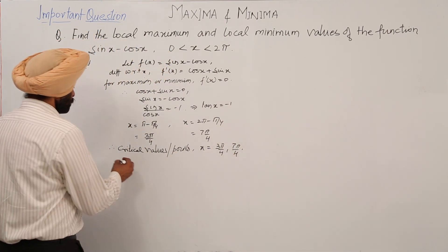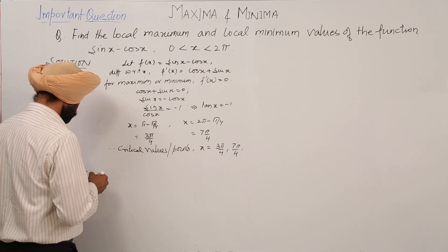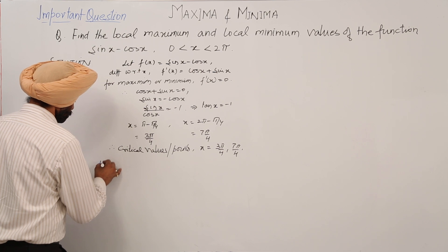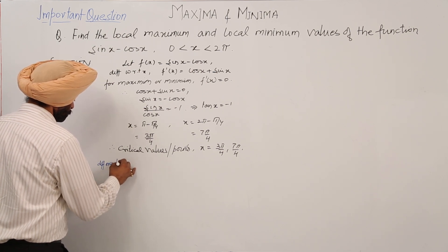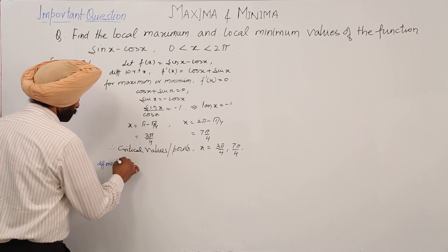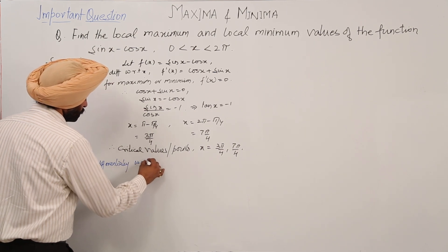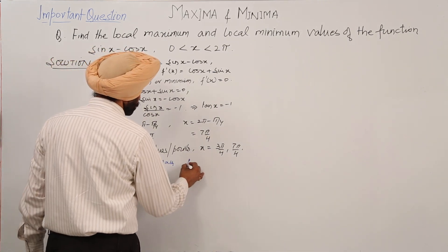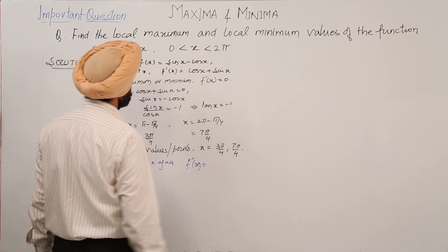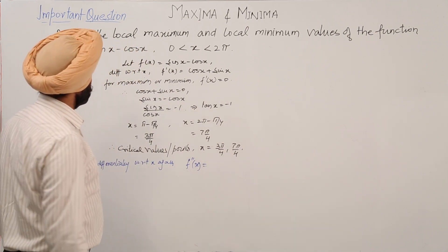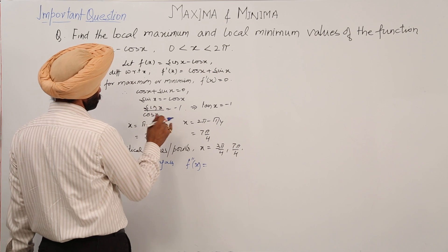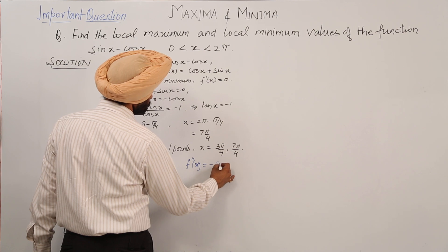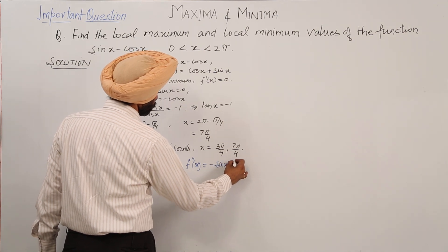Now differentiating with respect to x again for the second derivative test. f''(x): since f'(x) was cos x plus sin x, differentiating gives f''(x) = minus sin x plus cos x.